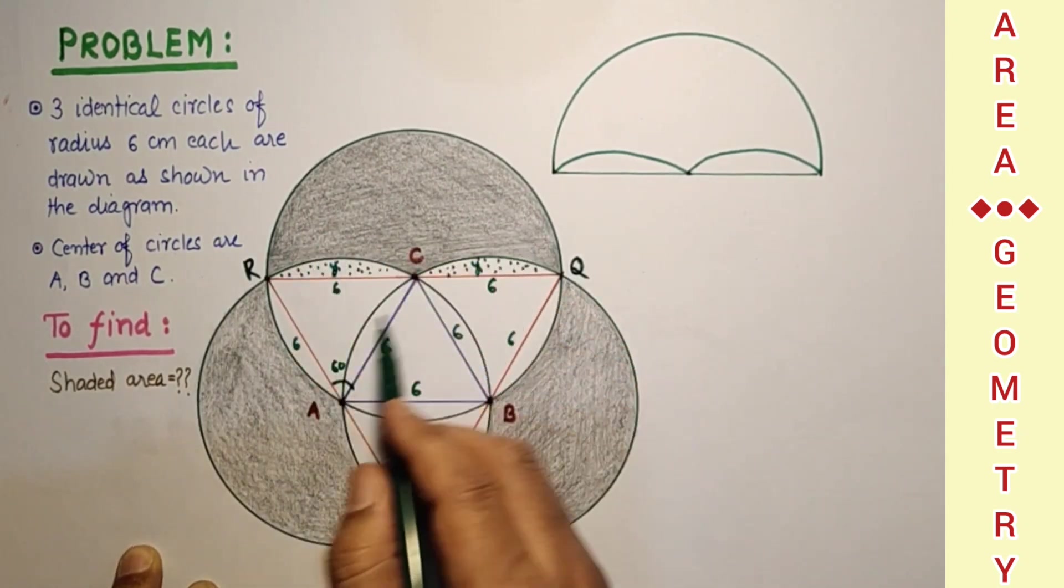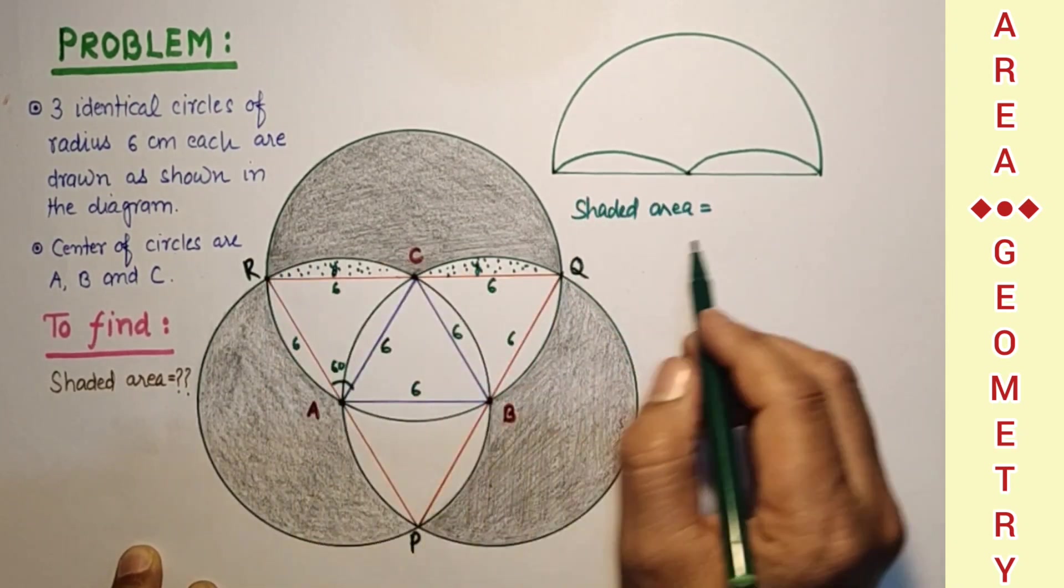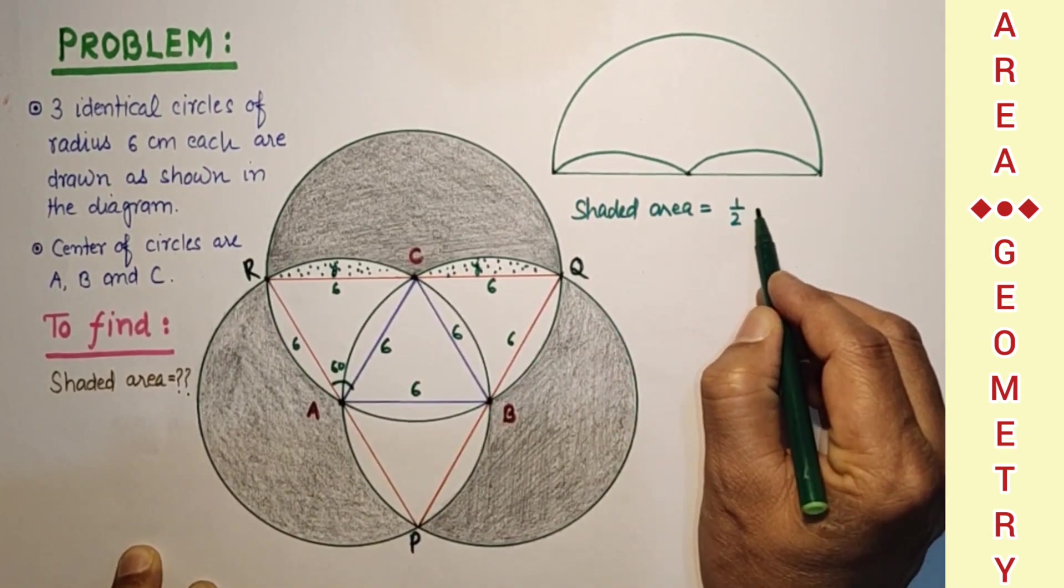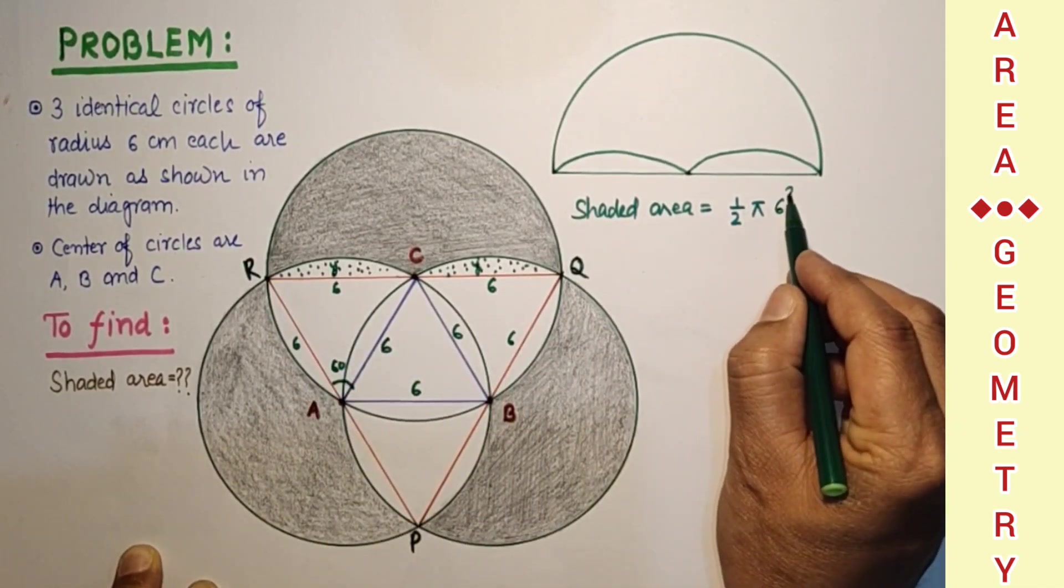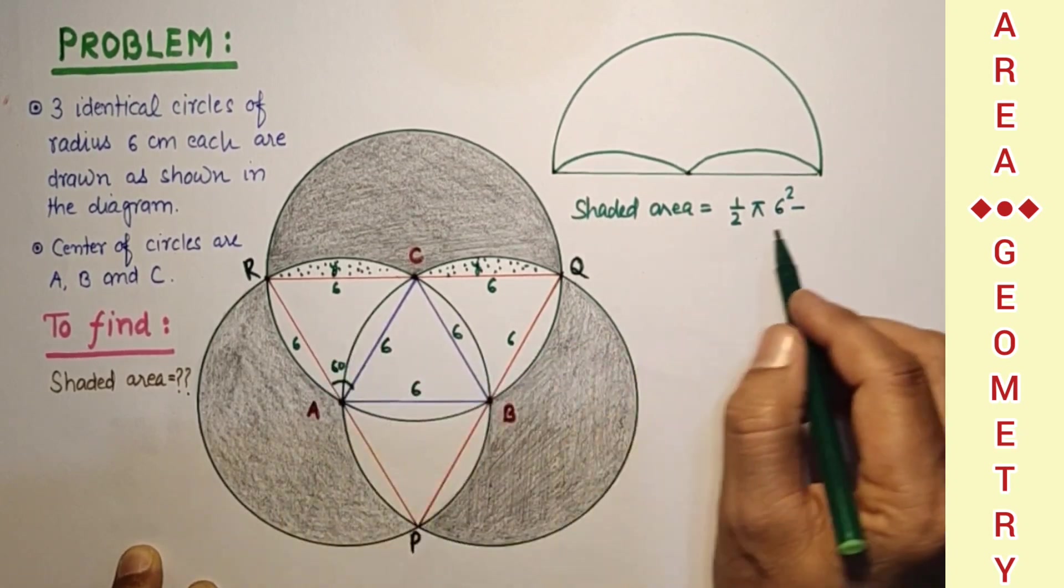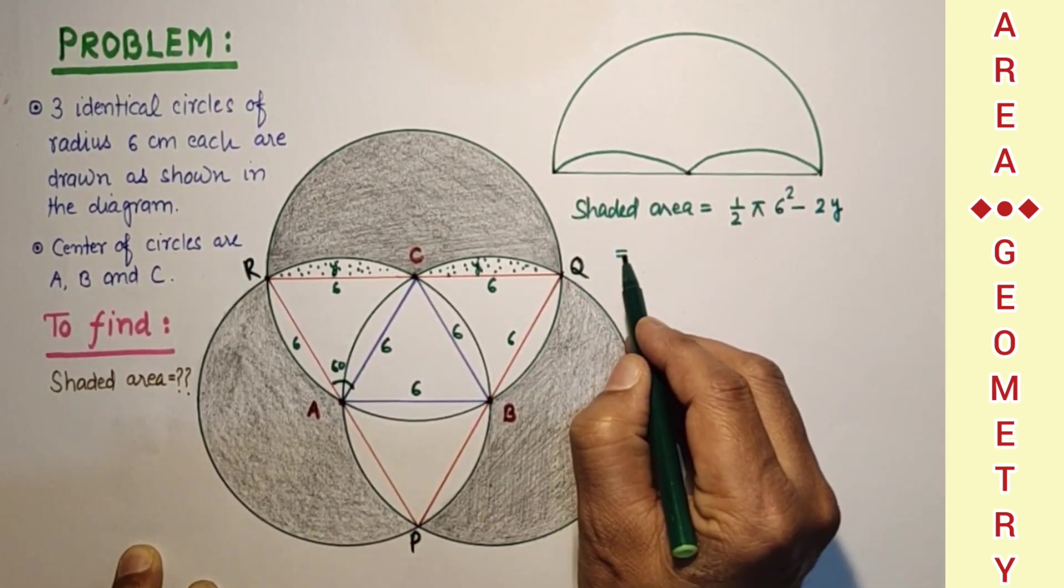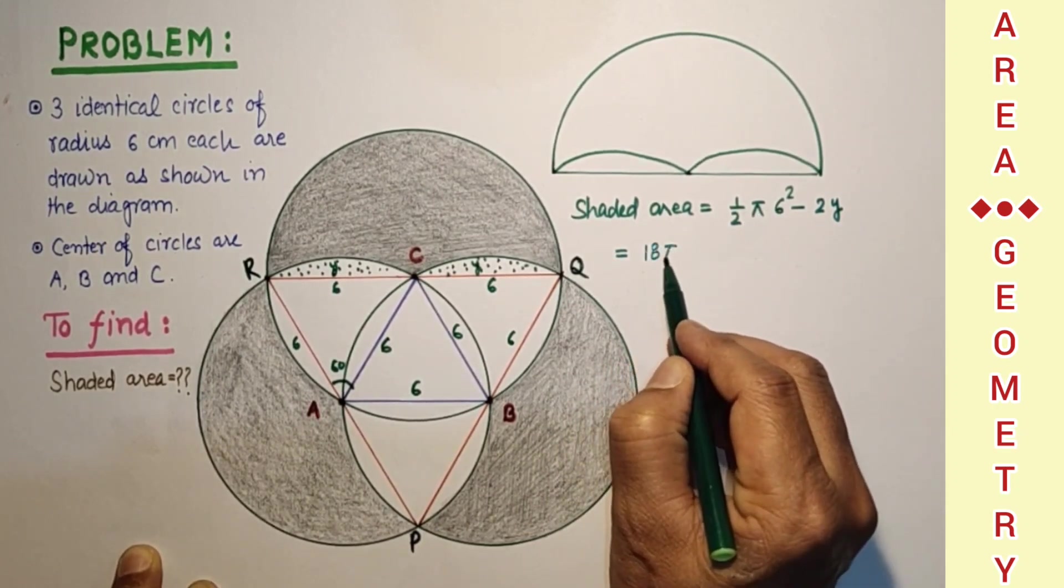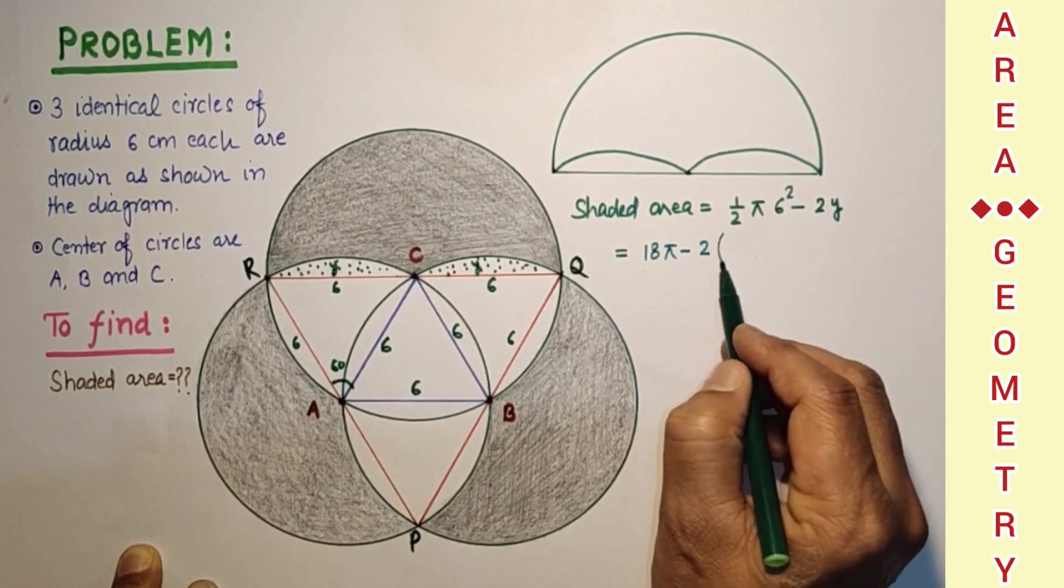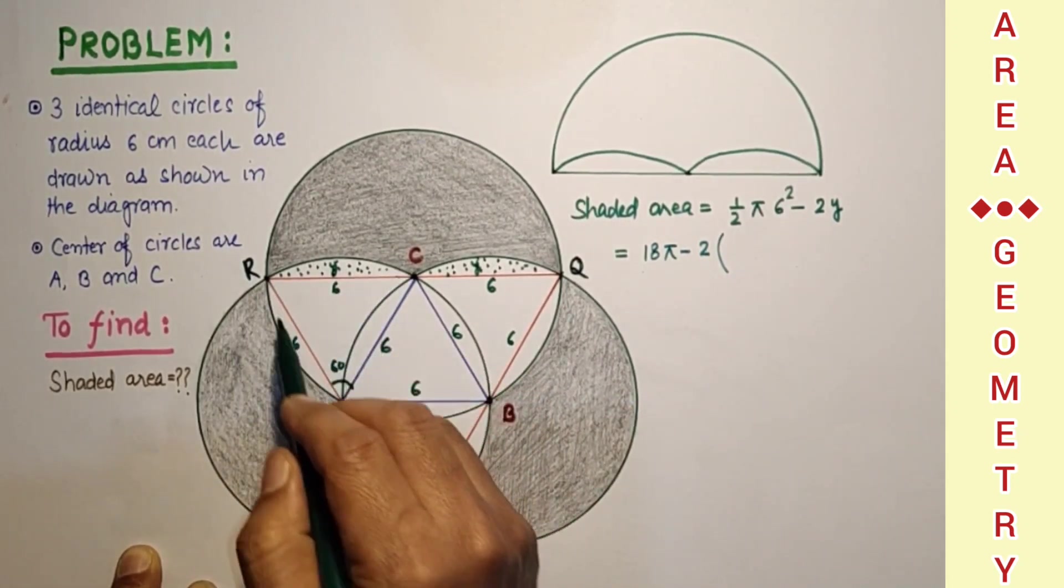So the shaded part is half pi r square. Pi r square, r is 6 here, minus 2y which is equal to 36 pi by 2 which is 18 pi minus 2. And this is what, sector's area minus triangle's area. Sector is what, sector's area.